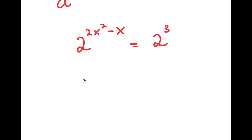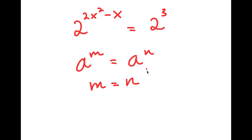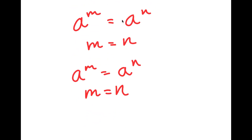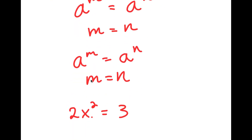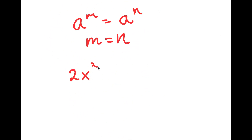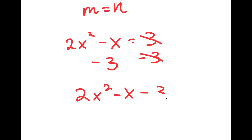If a to the power of m is equal to a to the power of n, this means that m is equal to n. So since 2 to the power of 2x squared minus x equals 2 to the power of 3, that means 2x squared minus x is equal to 3. Subtracting 3 from both sides gives 2x squared minus x minus 3 is equal to 0.